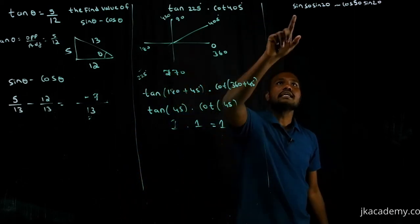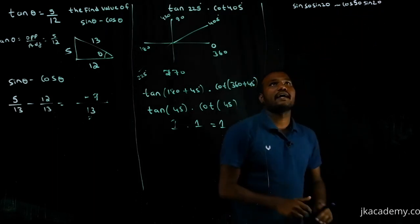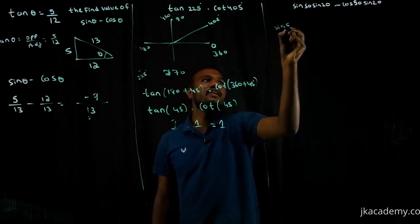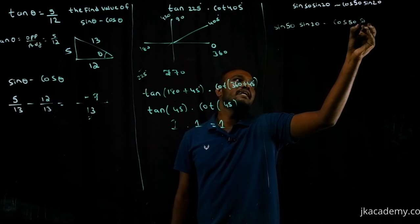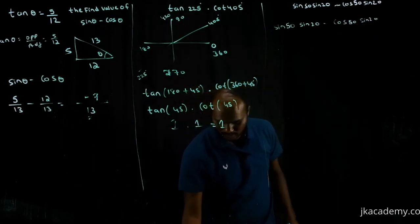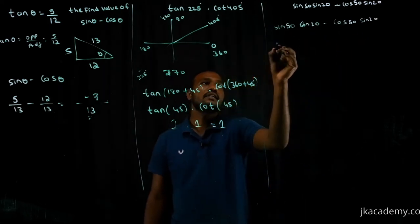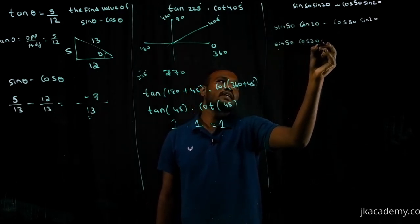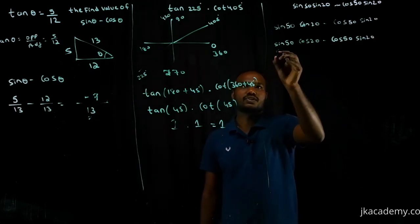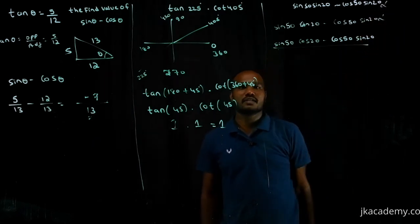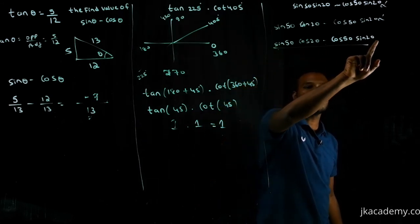Let's go to the third question. The correct question is: sin 50° · cos 20° minus cos 50° · sin 20°. I initially wrote it wrong, so let me clarify: the question given in the question paper is sin 50° cos 20° − cos 50° sin 20°.